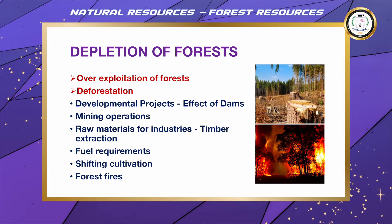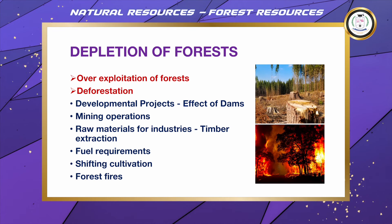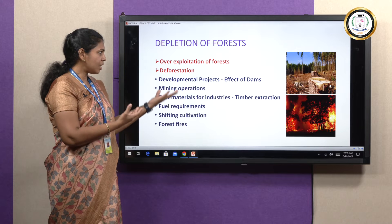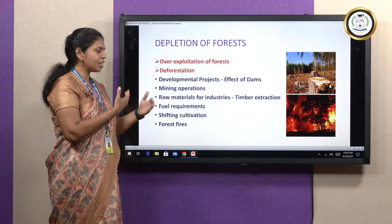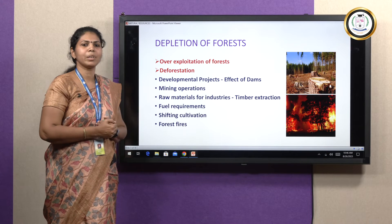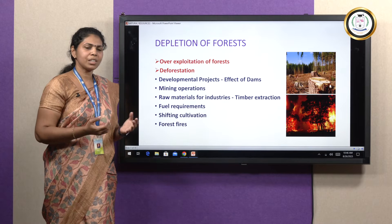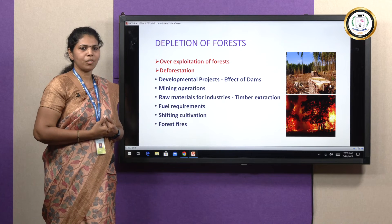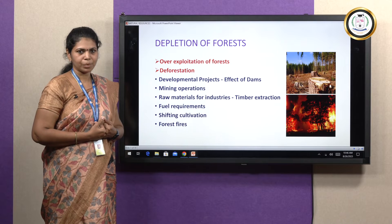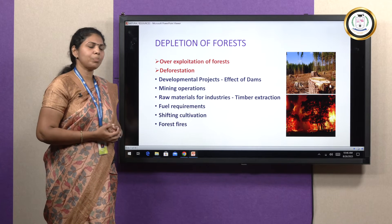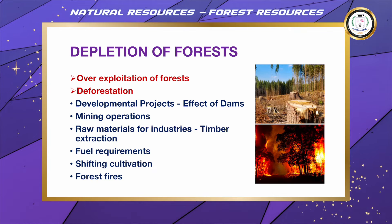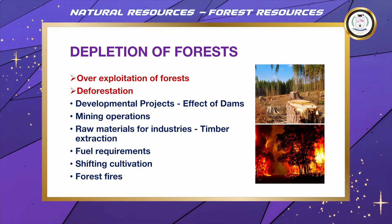Now let us move on to the negative part — the sad part — depletion of forests. Why are we depending on forests beyond a particular level? All this is because of exploitation and overpopulation. Whatever we are able to get from the forest, we are not sufficient. Because of increase in population, we need to overexploit the forest, and that is what is leading to the decrease in the percentage of forest.